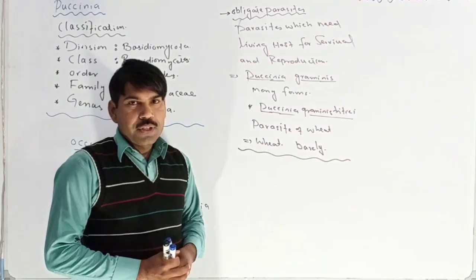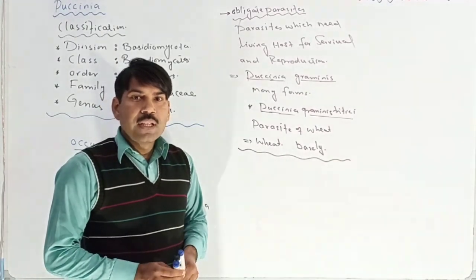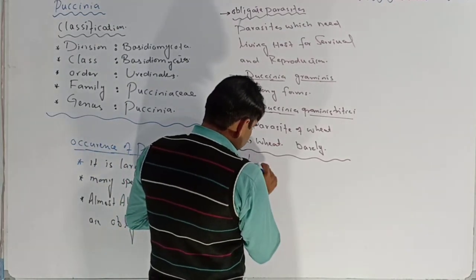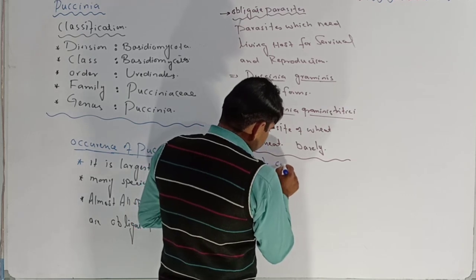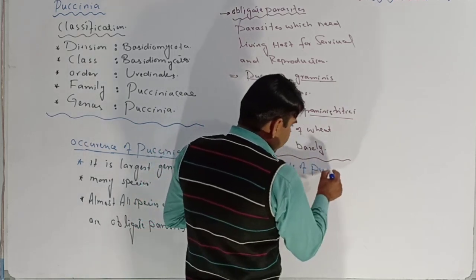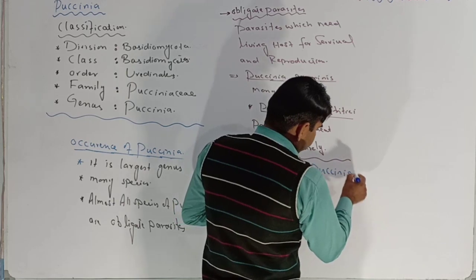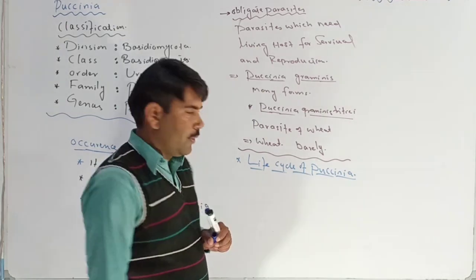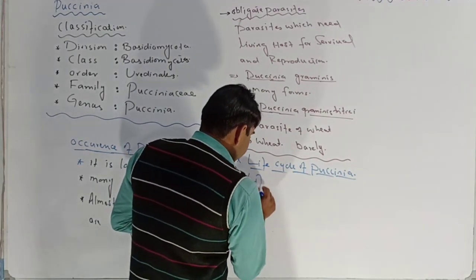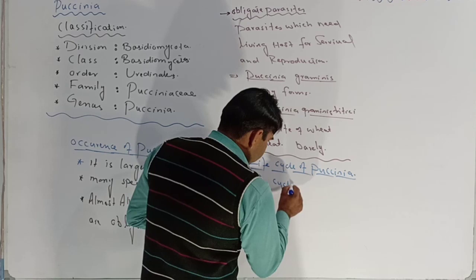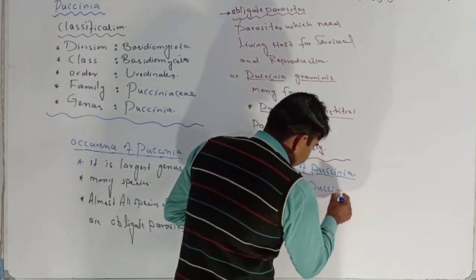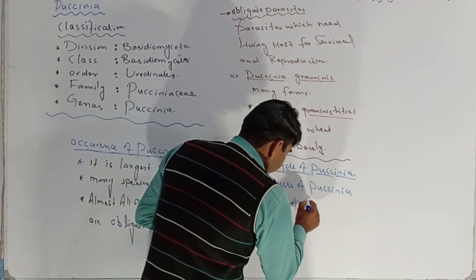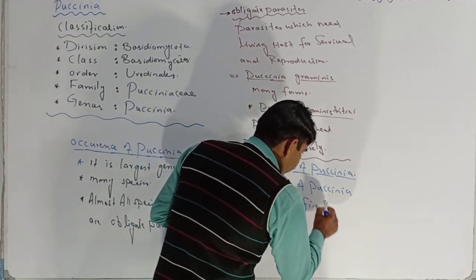After the occurrence and classification, we are going to discuss about the life cycle of Paksinia. The life cycle of Paksinia consists of five phases or stages.